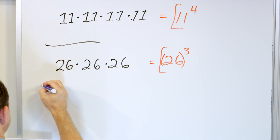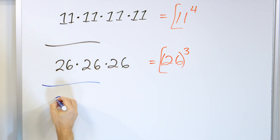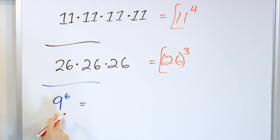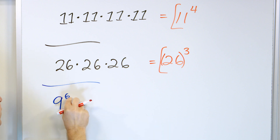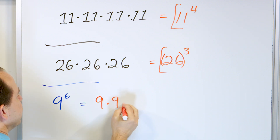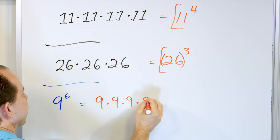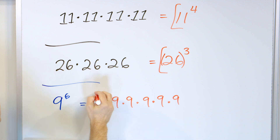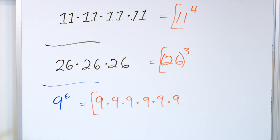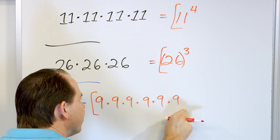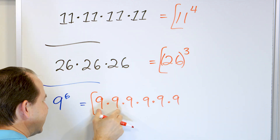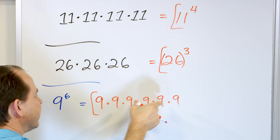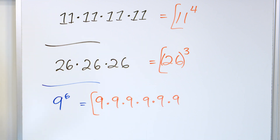What about nine to the power of six? How do you write this as a product of factors? Well, the base is nine and we are multiplying six of them: nine, number two, number three, number four, number five, and number six. So nine to the power of six equals nine times nine times nine times nine times nine times nine. Nine times nine is 81, then 81 times nine, and you keep multiplying by nine — it's going to be a very, very large number.